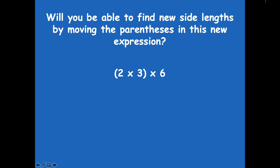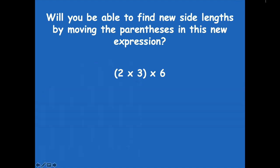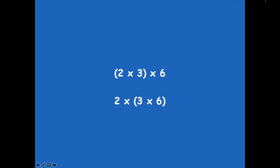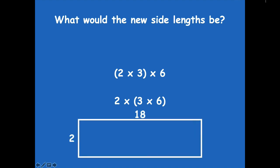If I were to move those parentheses, I would get different side lengths — a two by 18, because I have one side as two, and three times six equals 18. All of these still have an area of 36; they're just different ways to show it.